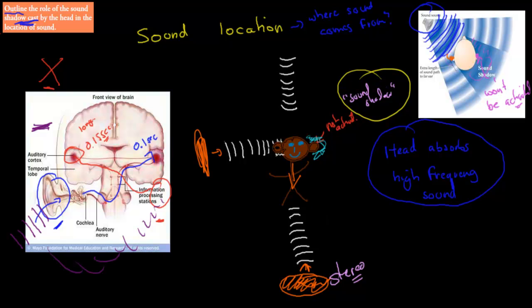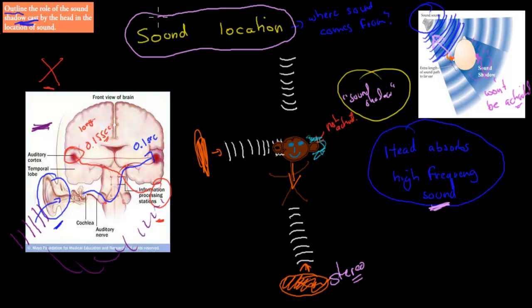To summarize: the sound shadow is created by the head absorbing high-frequency sounds, which means the source activates only the ear facing it, while the ear behind it lies in the sound shadow and doesn't get activated. This helps you locate sounds, and it's why humans often move their heads to figure out where sounds are coming from.